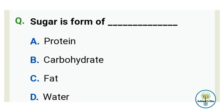Sugar is a form of what? Option A: Protein. Option B: Carbohydrate. Option C: Fat. And option D: Water. You know that sugar is a very bigger form of carbohydrates, so the correct answer for this question is option B, Carbohydrate.